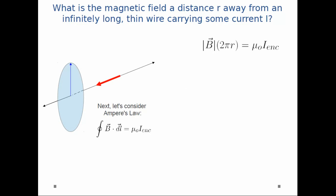Now, finally, I need to look at i enclosed. In this case, the current that pierces the Amperian surface is just i. We said at the beginning of the problem, this wire had some current i passing through it. And so, when I rearrange terms, I get B is equal to μ₀ i divided by 2πr.